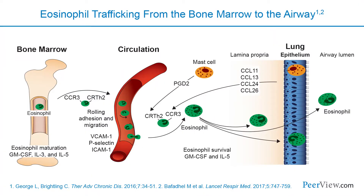Eosinophils are derived from pluripotent CD34-positive progenitor stem cells found in the normal bone marrow. This differentiation occurs under the influence of GM-CSF and IL-3 in early phases, and IL-5 in the latter phases of differentiation. Mature eosinophils are released from bone marrow into the circulation, primarily regulated by IL-5. Eosinophils are transformed from a quiescent state to a state of increased hyperresponsiveness by priming agents such as IL-3, IL-5, and GM-CSF.